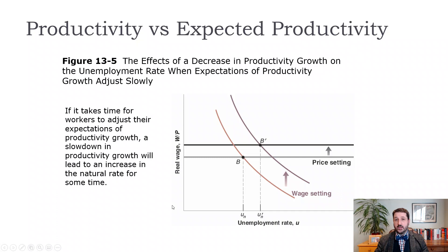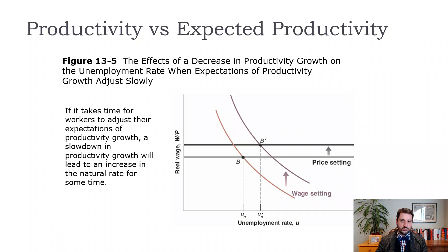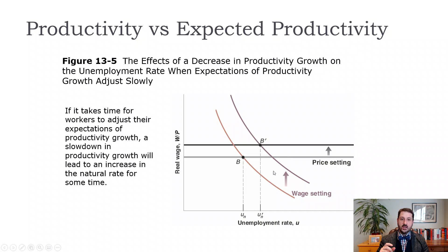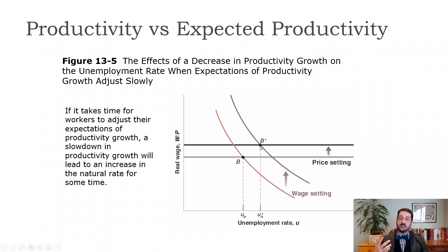So there's not a huge relationship in either direction, but if anything, higher productivity growth is associated with lower unemployment. Why might that be? If there's a change in productivity growth, expectations might not be correct. When there's a decrease in productivity growth that's unexpected, the wage-setting equation shifts up more than the price-setting equation, and we end up with a higher unemployment rate. Conversely, in decades where productivity was higher than expected, the price-setting equation increases by more than wage-setting, and we end up with a decrease in the natural unemployment rate.